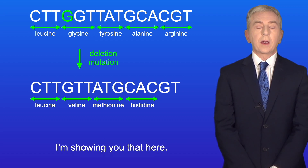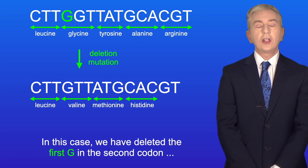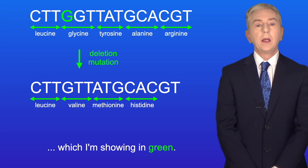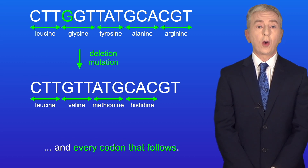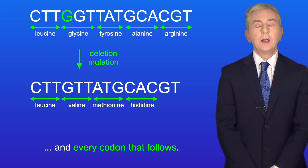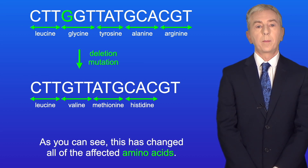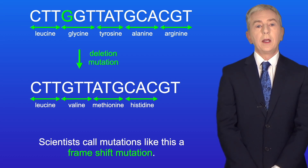I'm showing you that here. In this case, we've deleted the first G in the second codon, which I'm showing in green. This has changed both the second codon and every codon that follows. And as you can see, this has changed all of the affected amino acids. Scientists call mutations like this a frame shift mutation.